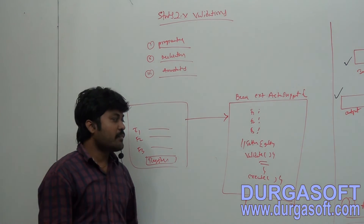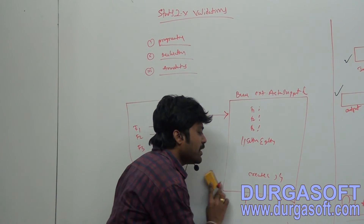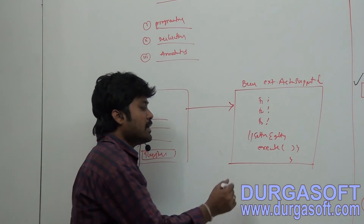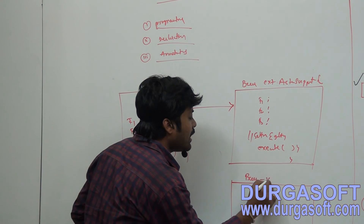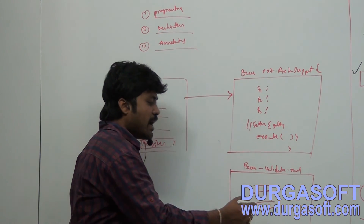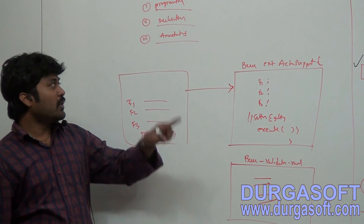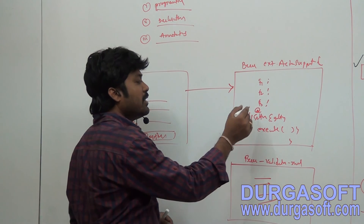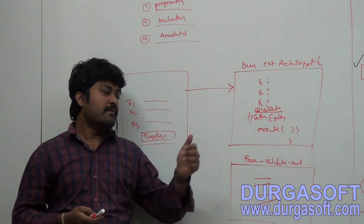For controller operations you use the execute() method. If you want to handle validations through an XML file instead of overriding validate(), you create an XML file alongside your class. The XML file name should be: BeanName-validation.xml. Write your validations in that XML file and it will be read automatically. For the annotations approach, use validation annotations on top of your setter methods.